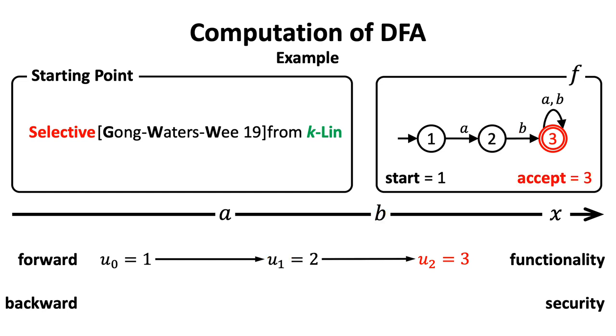Now, the machine has read all bits and is at state 3, which is an accept state. Therefore, F will accept the input X.